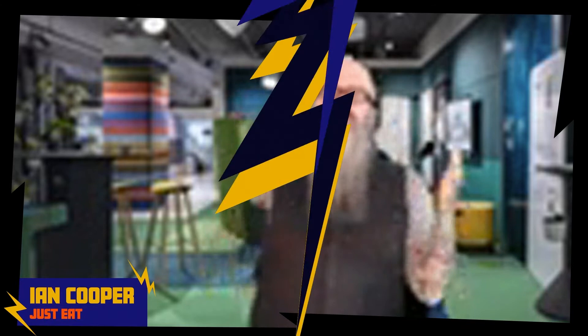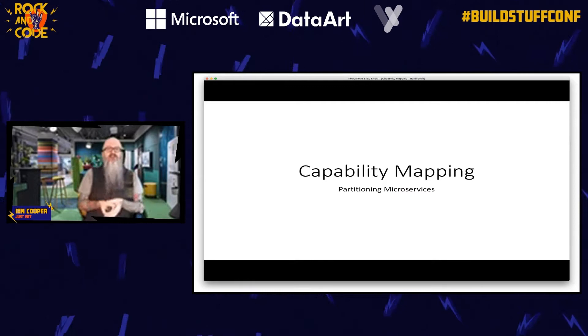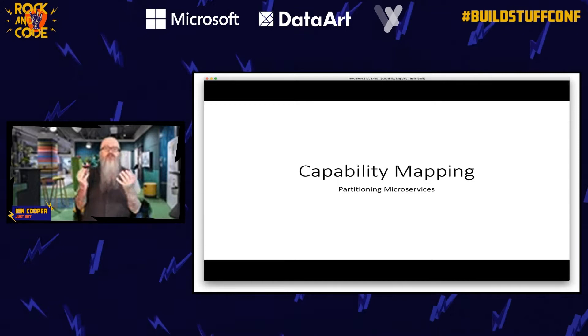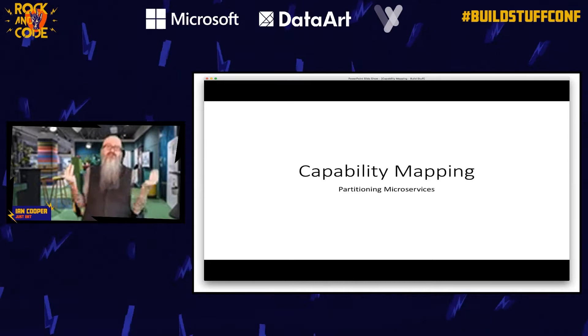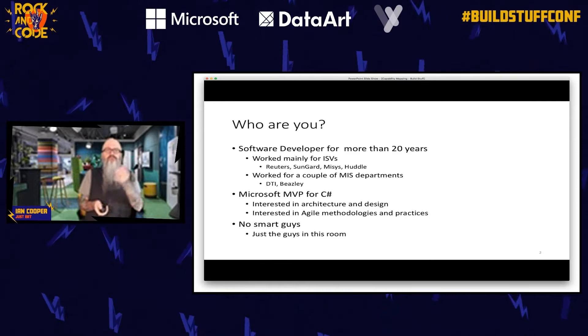Hey everyone, thanks very much. I'm here today to talk about what we call capability mapping — really, how we slice up our state into microservices. When you look at white papers around microservices, like Fowler and Lewis's, they refer to aligning your microservices with a business capability, but it's very hard to find information on what that actually means. This is a journey into describing that and how you partition your state into microservices.